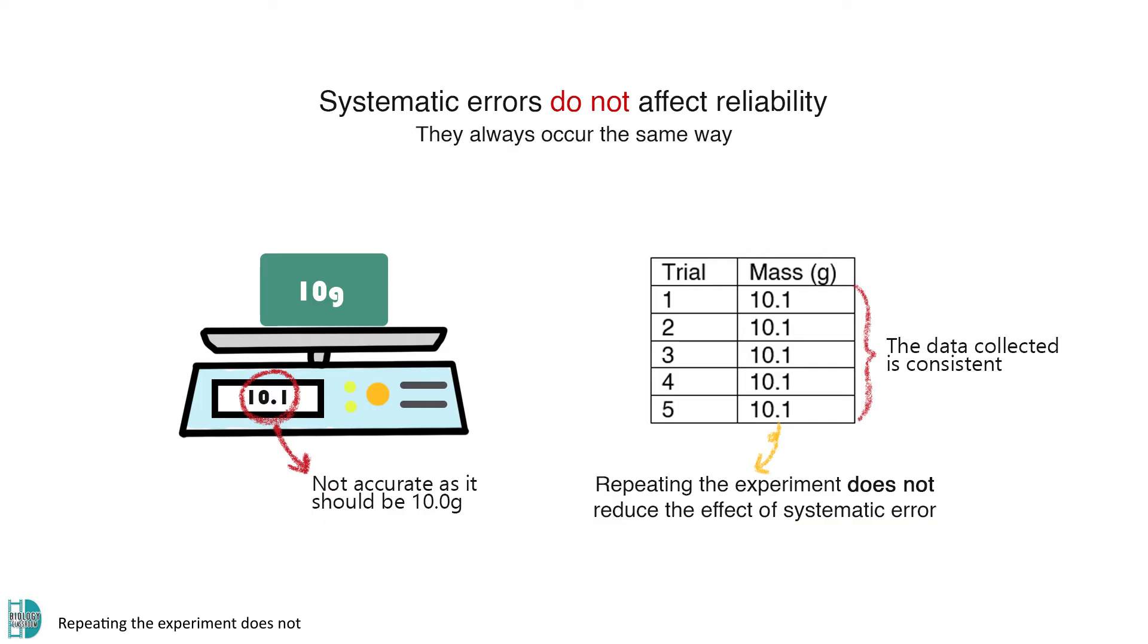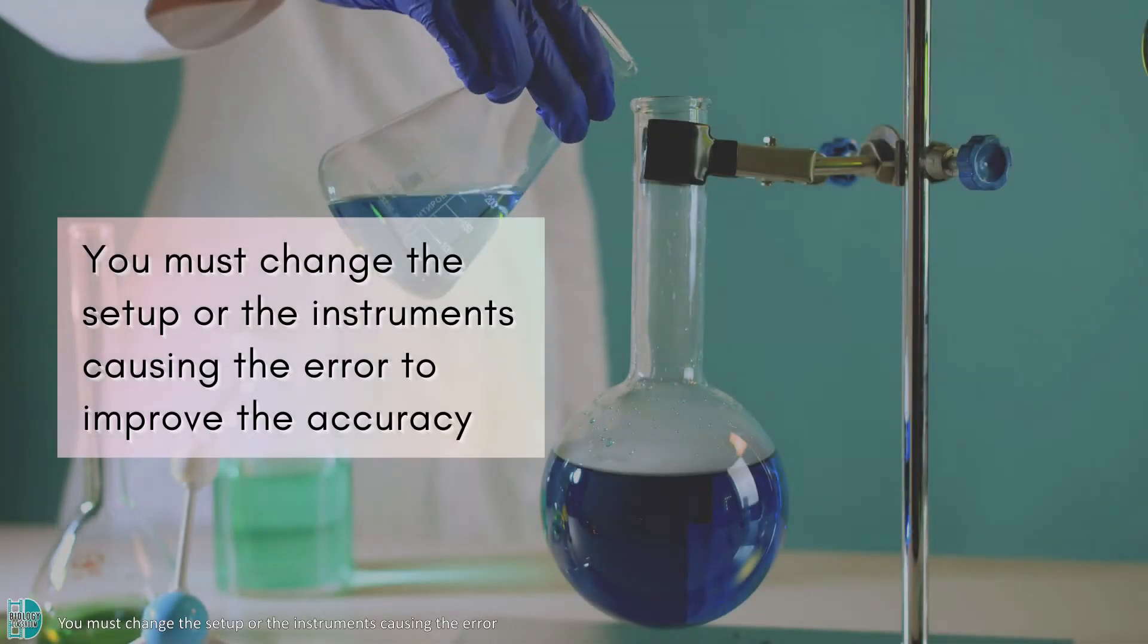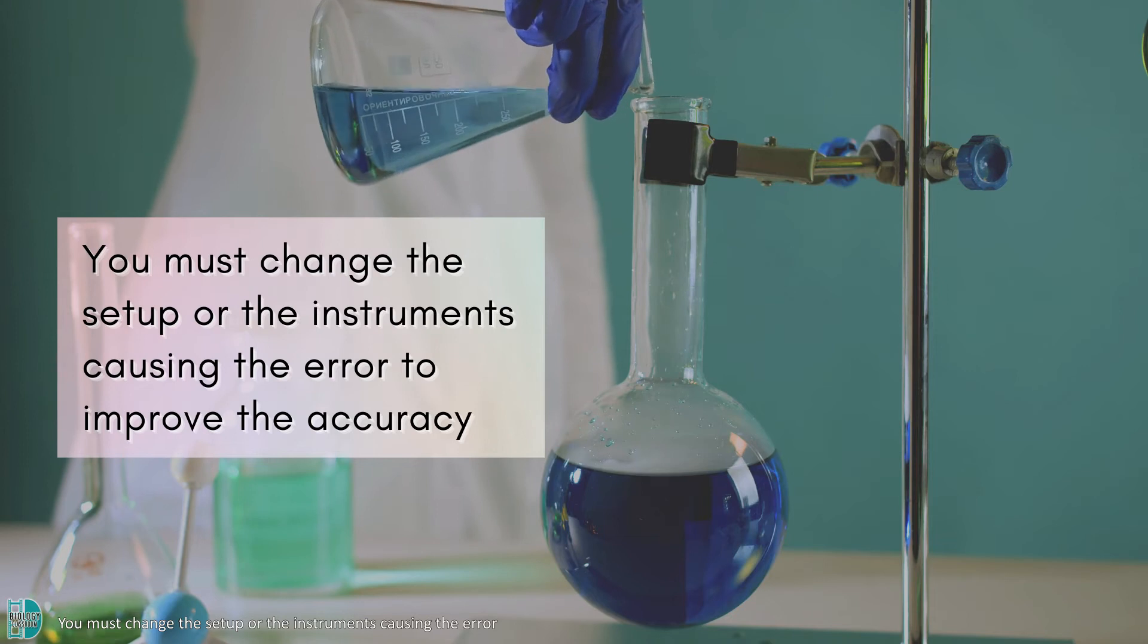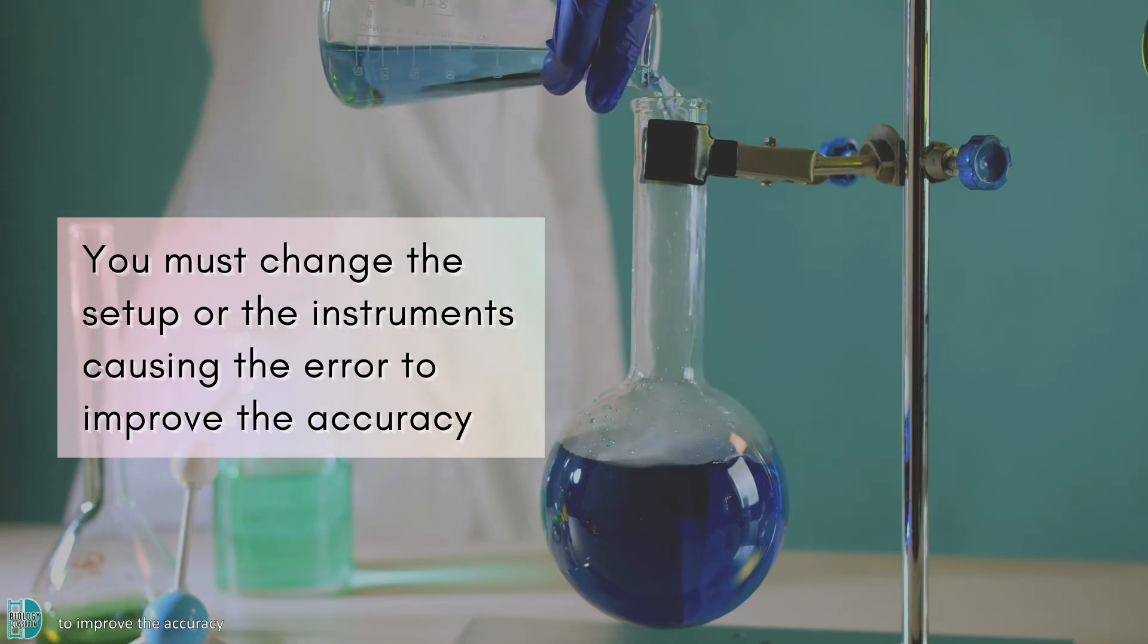Repeating the experiment does not reduce the effect of systematic error. Since the error always occurs no matter how many replicates you make, you must change the setup or the instruments causing the error to improve the accuracy.